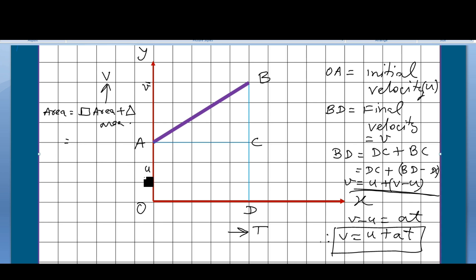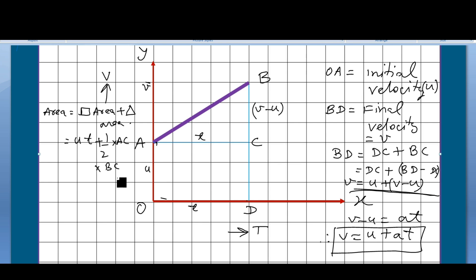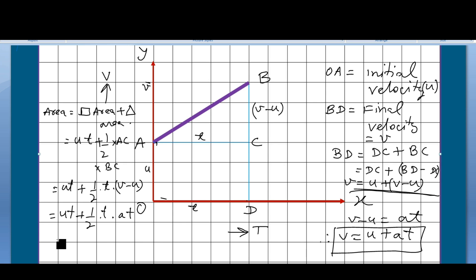The time interval is t and the initial velocity is u. The area of the rectangle becomes u times t. The area of the triangle is one-half times base AC times height BC. Now BC equals v minus u and AC equals t, so the total area becomes ut plus half times t times (v minus u). Since v minus u equals at, this becomes ut plus half times at squared.